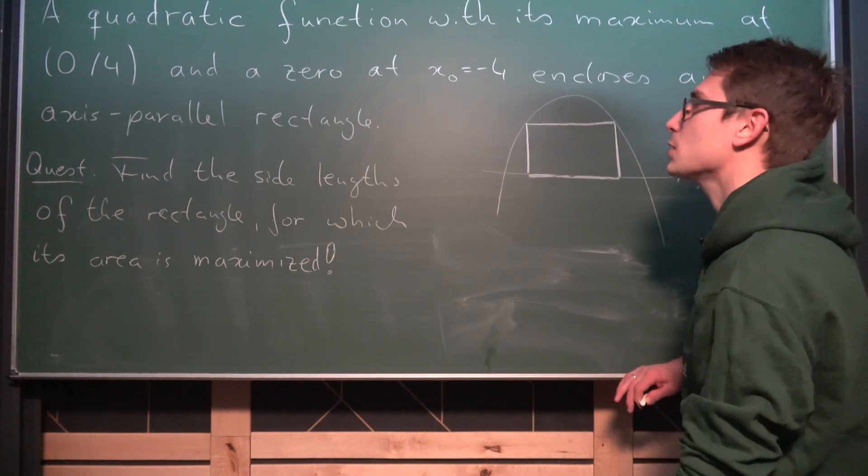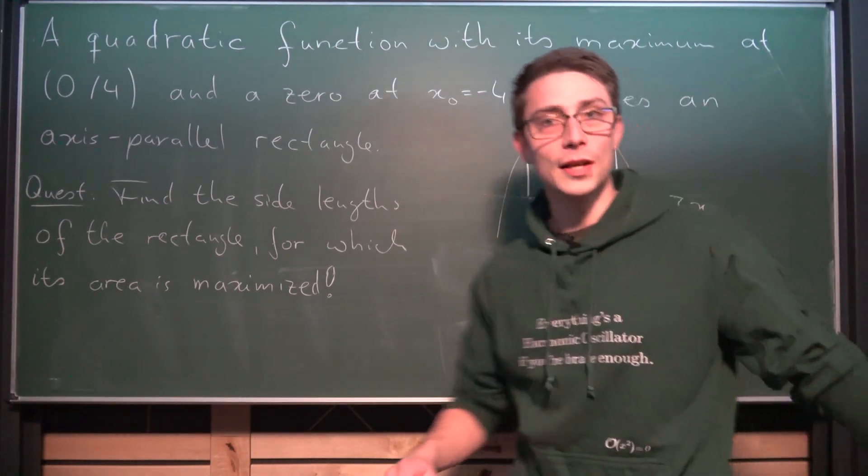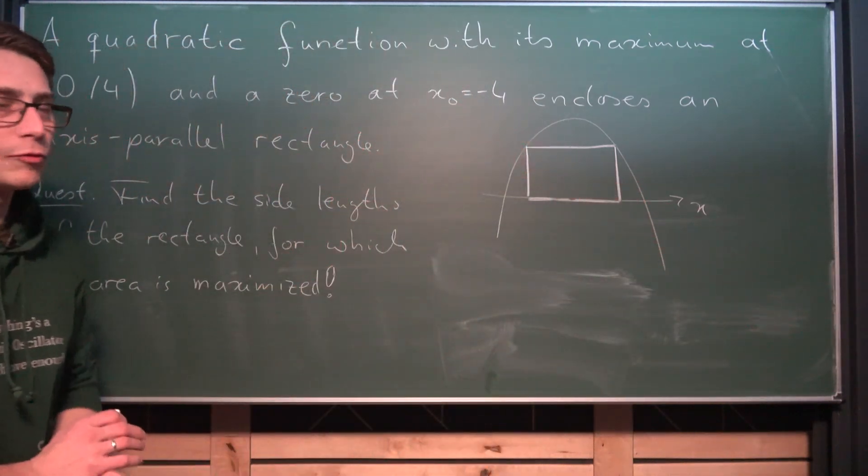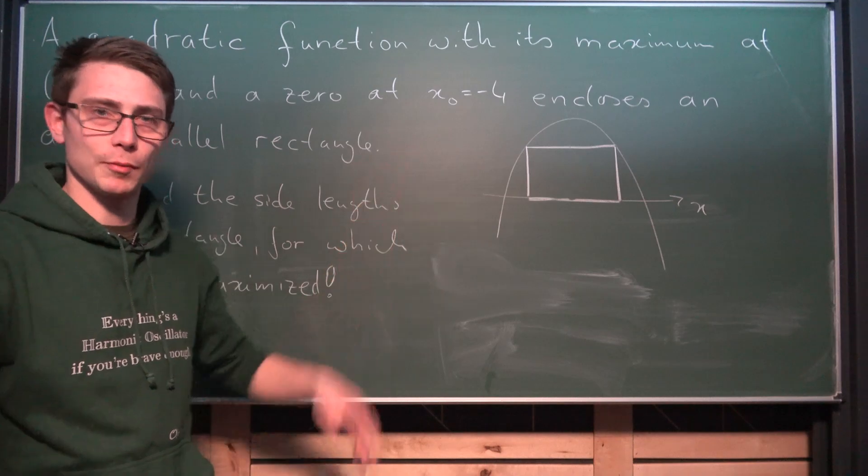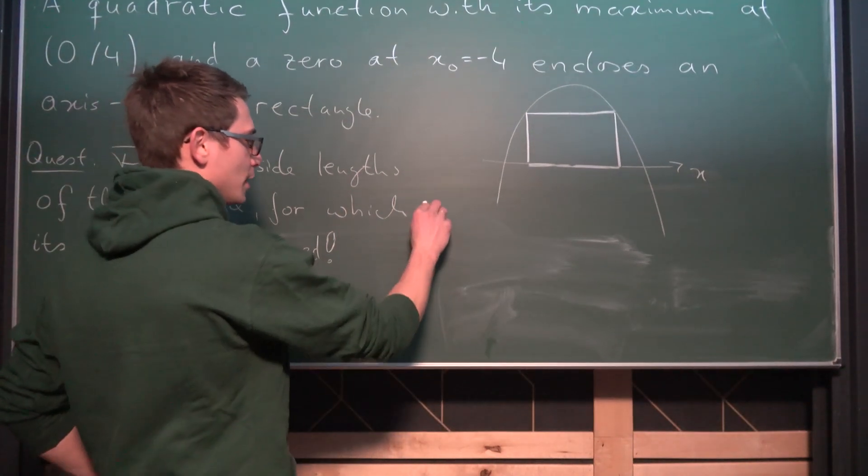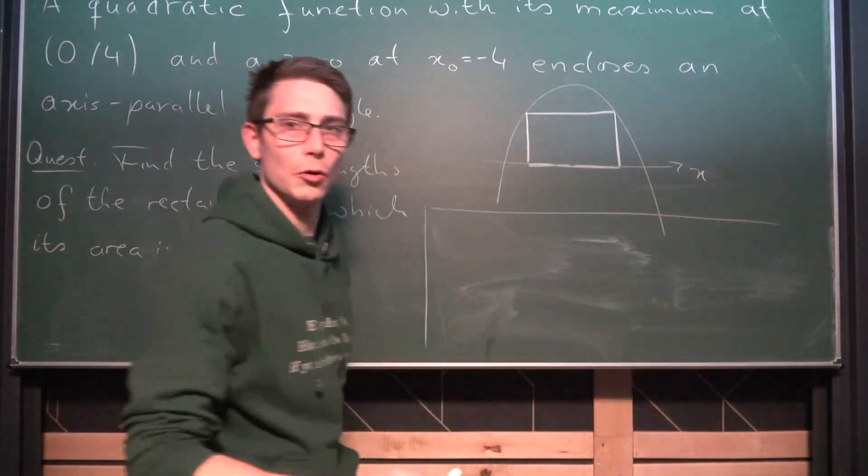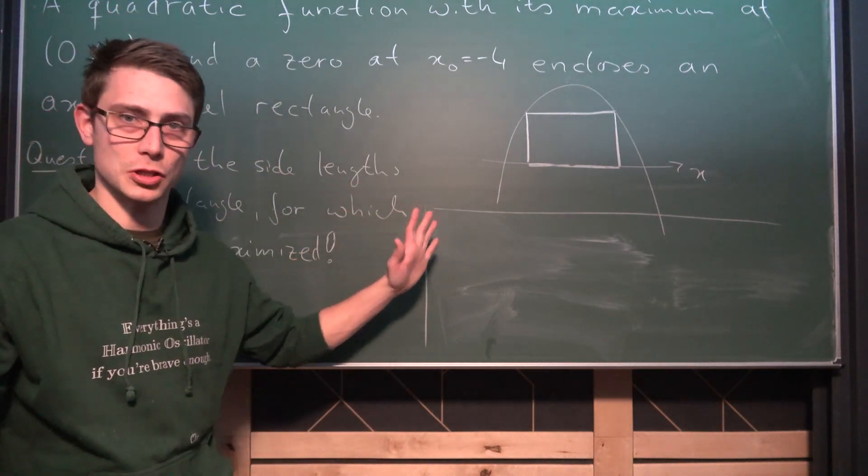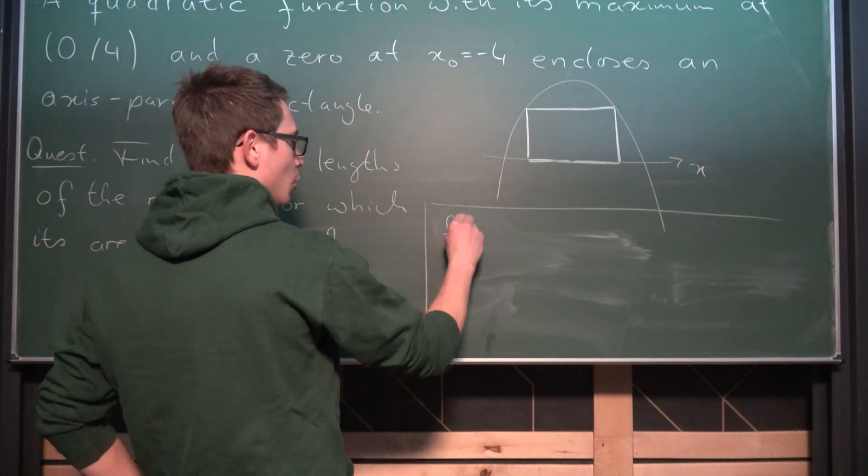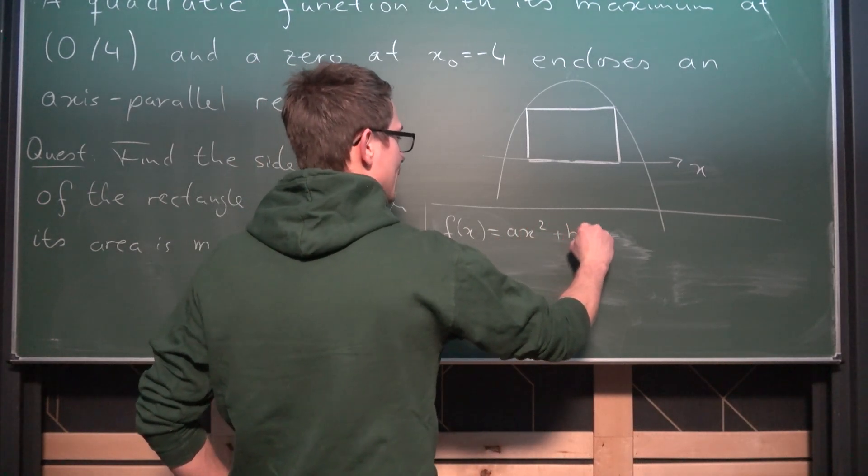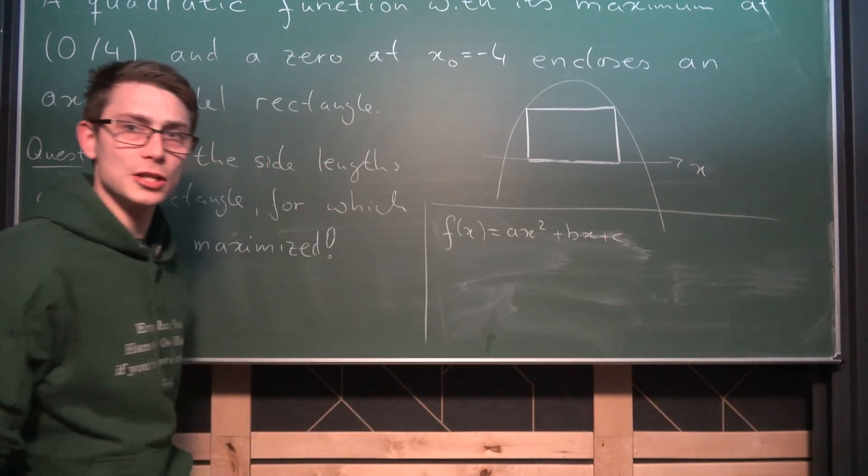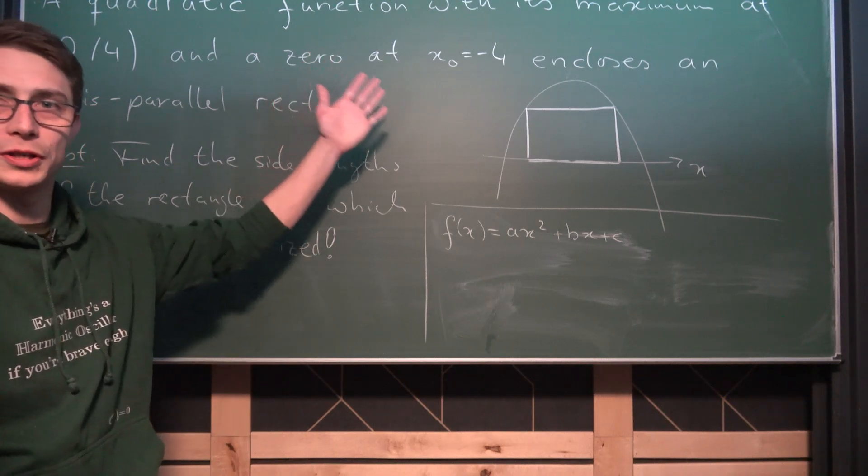Now the first thing that we need to do is we need to actually get ourselves the formula for our parabola. And we are going to go at it from a calculus perspective. So the first thing we need to do is we need to write out what a quadratic function looks like in general. Well it always looks like this. f(x) is equal to ax² plus bx plus c. And now we can just plug our conditions in.